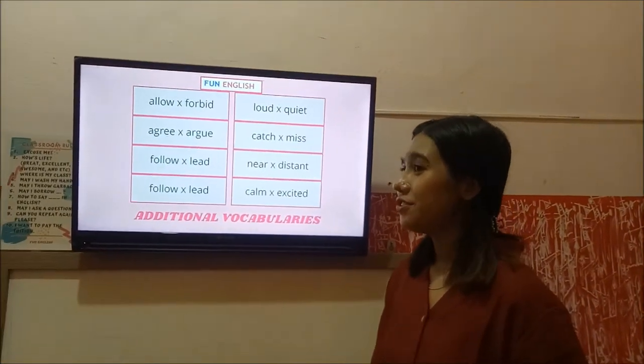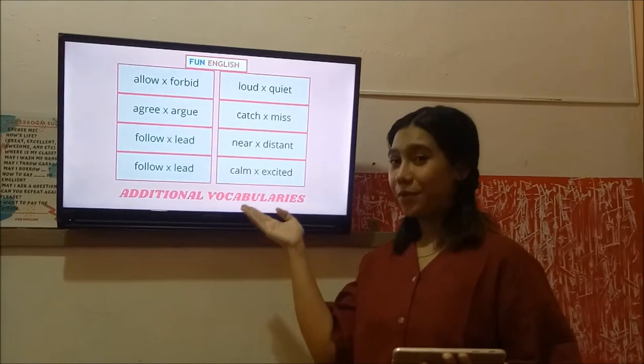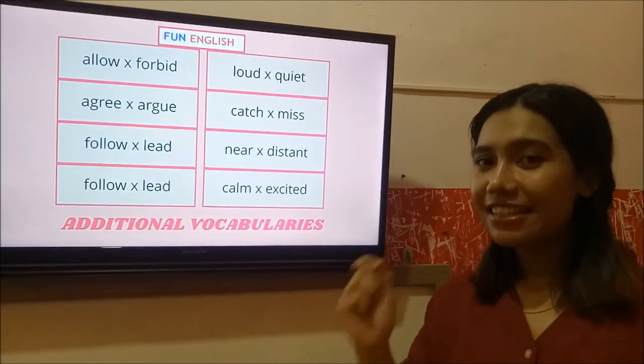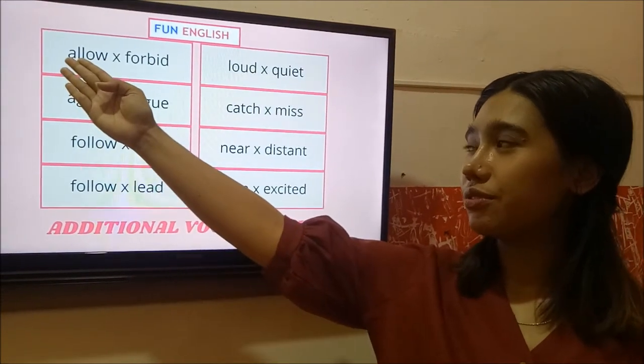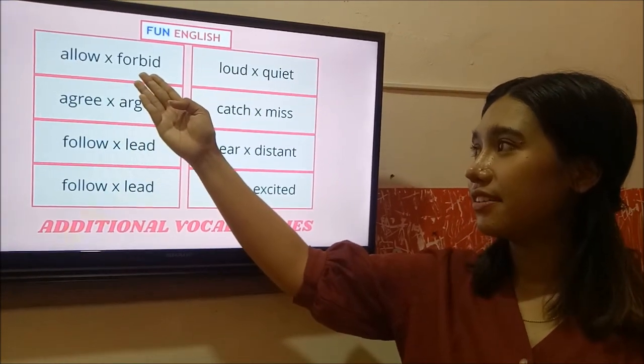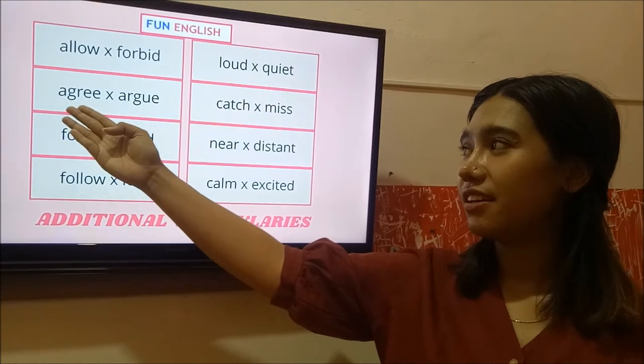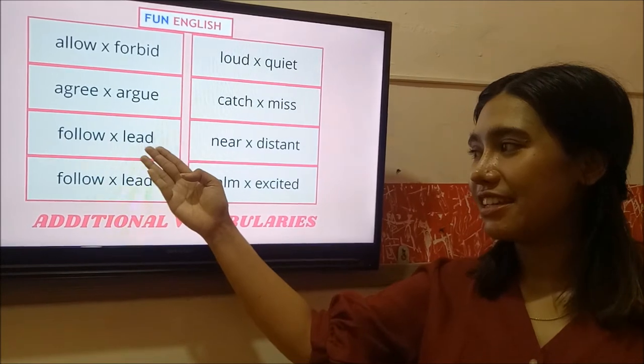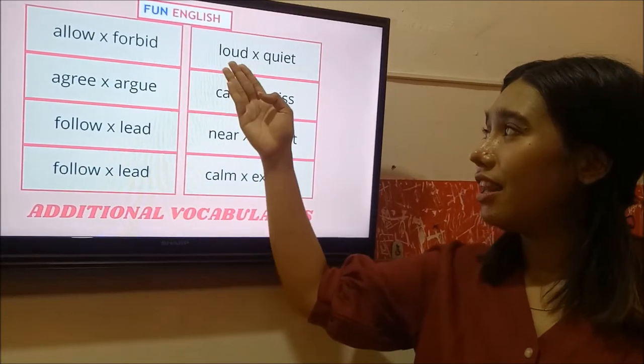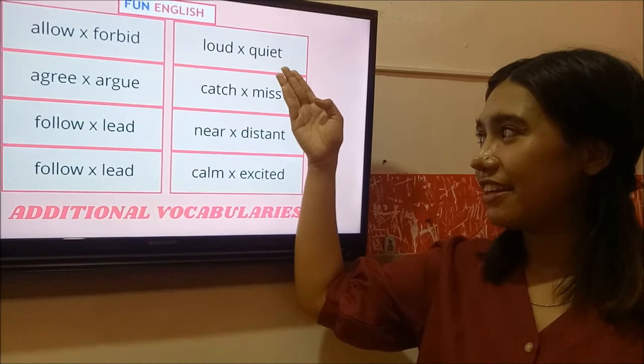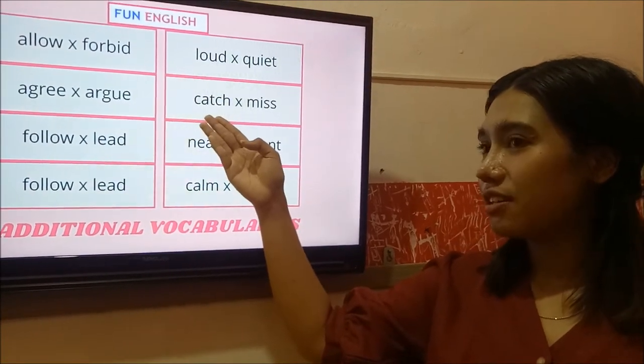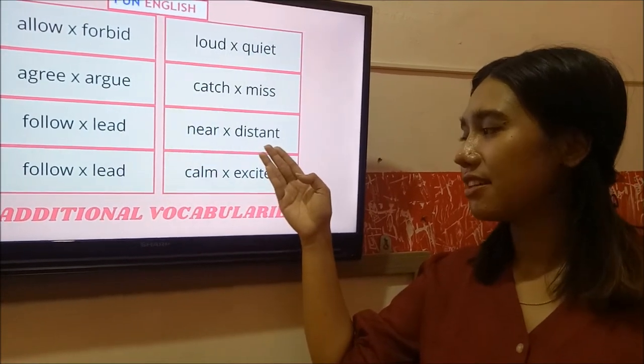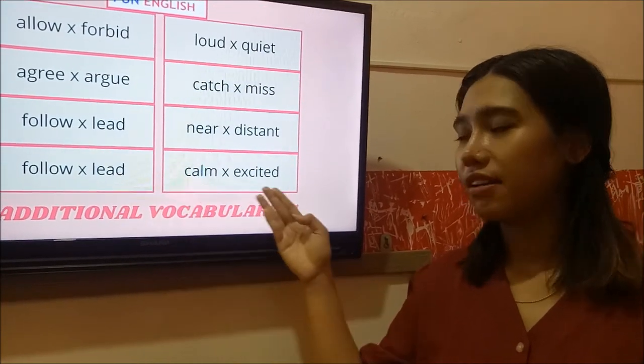And you can see on your paper this additional vocabularies. Let's say it together. Allow. Forbid. Agree. Agree. Follow. Follow. Say it. Loud. Quiet. Catch. Miss. Near. Distant. Calm. Exciting.